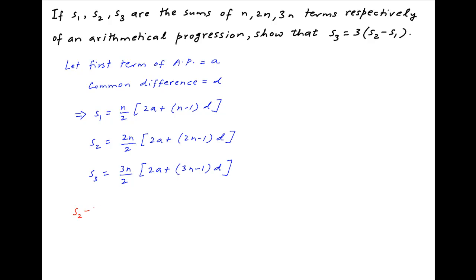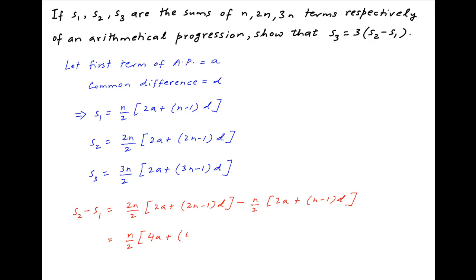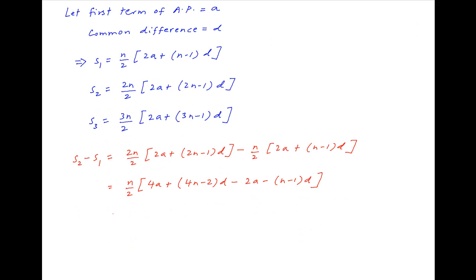Therefore, S2 minus S1 is equal to 2n upon 2 times in brackets 2a plus n minus 1 times d, minus n upon 2 times in brackets 2a plus n minus 1 times d. Combining the two terms, we get n upon 2 times in brackets 4a plus 4n minus 2 times d, minus 2a minus n minus 1 times d. This is equal to n upon 2 times in brackets 2a plus 3n minus 1 times d.